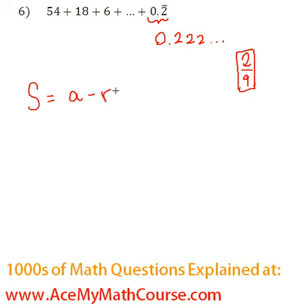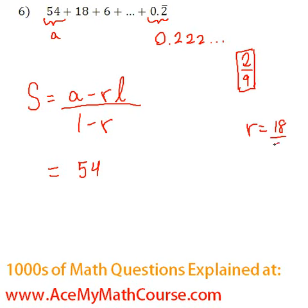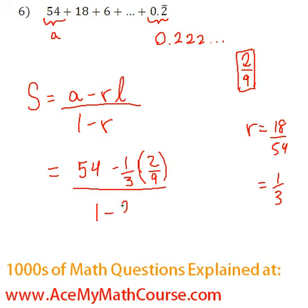The formula is a minus r l over 1 minus r, where l is the last term. Our a is 54, and r is just going to be 18 over 54, which reduces to 1 third. So 54 minus 1 third times the last term, which is 2 over 9, all over 1 minus 1 third.